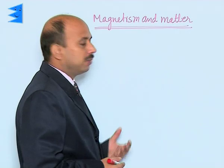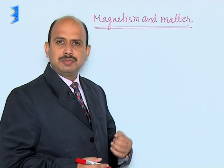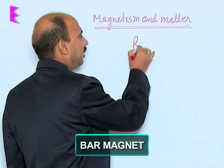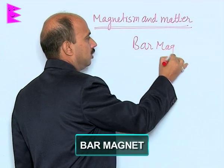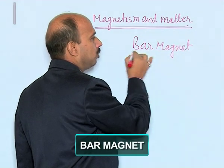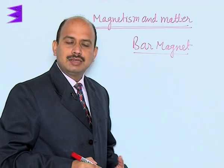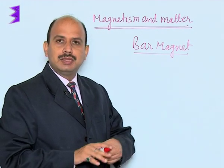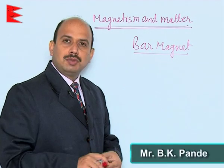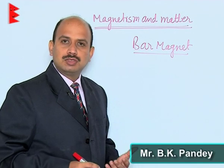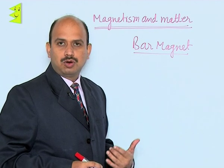Now, see the next chapter — that is Magnetism and Matter. In this chapter, the first topic is the bar magnet. You must be knowing about the properties of the bar magnet. Suppose you take a bar magnet and suspend it with the help of a thread — the north pole of the magnet points towards the north and the south pole points towards the south of the earth.